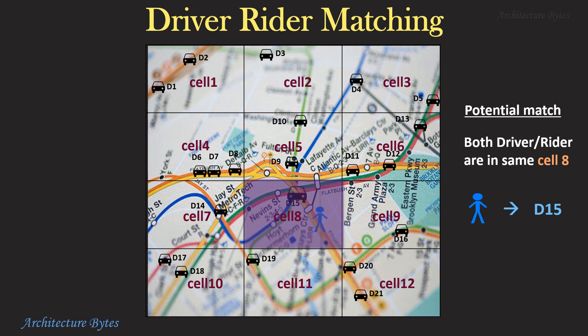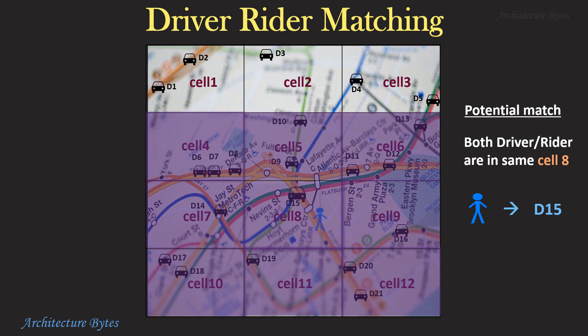This makes it easier to narrow down the search. Drivers in the same cell as the rider are a potential match — in this example, those in cell 8. However, we may want to cover adjacent cells too, for various reasons, like a driver in an adjacent cell might actually be closer to the rider. In addition, the system can use additional criteria to prioritize drivers within a cell for a ride.